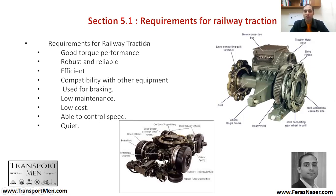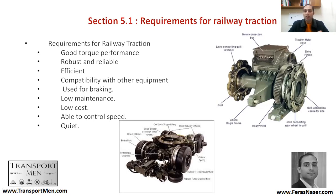So what are the requirements for railway traction? You would need good torque performance — torque meaning rotational movement. We need it to be robust and reliable, something that can last for long journeys. Efficient, not consuming a lot of energy. Compatible with other equipment like bogeys and axles. It can be used for braking. Low maintenance, low cost. You can control the speed, and it should be quiet. These are the standard requirements for any railway traction motor.